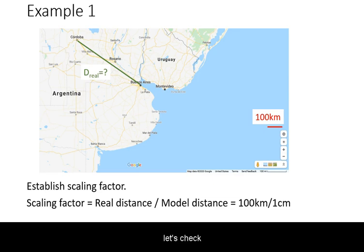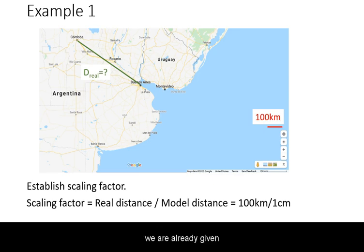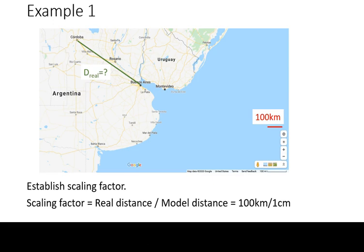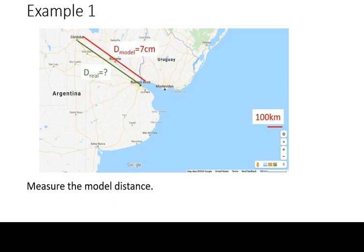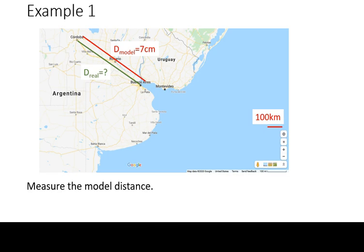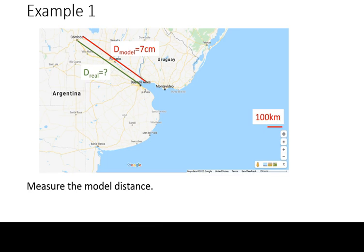First, let's check that we know the scaling factor. In this case, we are already given that 100 km is represented by 1 cm on the map. Next, we need to measure out the model distance on the map between the two cities. In this example, it turned out to be about 7 cm.